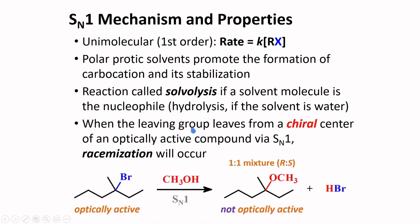When the leaving group leaves from a chiral center of an optically active compound via SN1, racemization will occur. This is because the carbocation has a trigonal planar arrangement, and the nucleophile can attack on opposite faces of this intermediate in equal fashion. Thus, if you start from the optically active alkyl halide here in the presence of methanol, the product would not be optically active because it is a one-to-one mixture of the R and S isomers. The whole process here is called racemization.